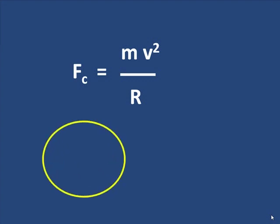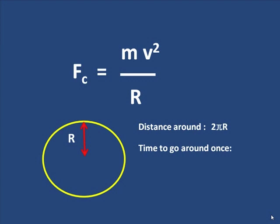So here's a circle and it has radius r. Two things we need to know. First, the distance around is called the circumference and it is given by 2πr. And that's distance. The time for something to go all the way around one time in the circle is called the period. And it is given the symbol T.